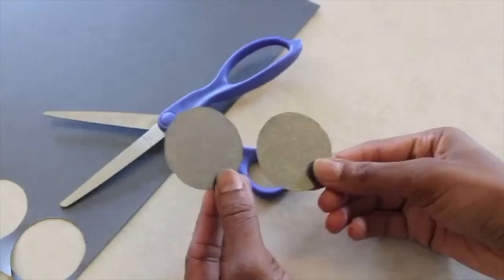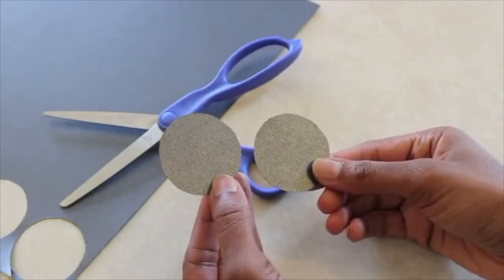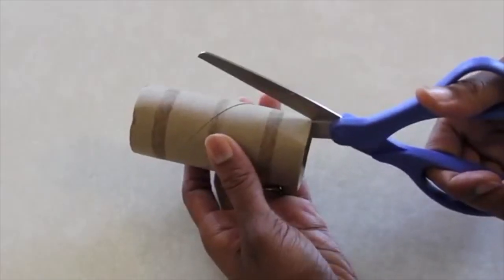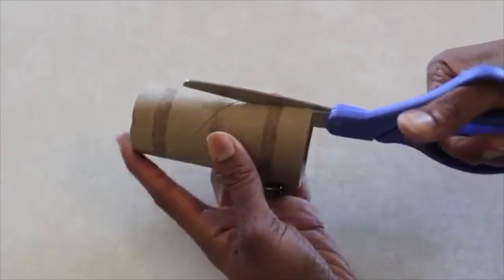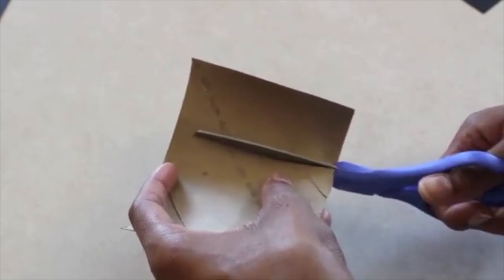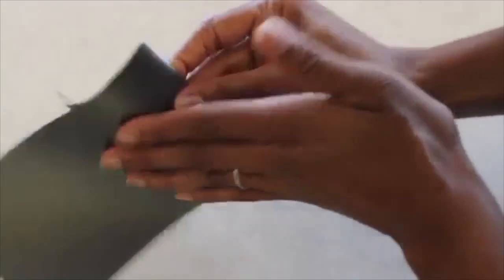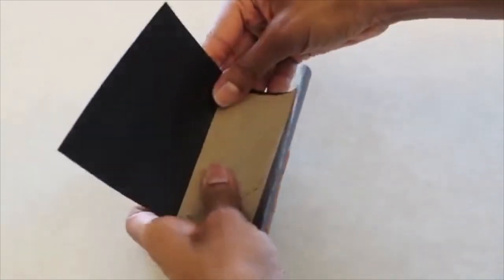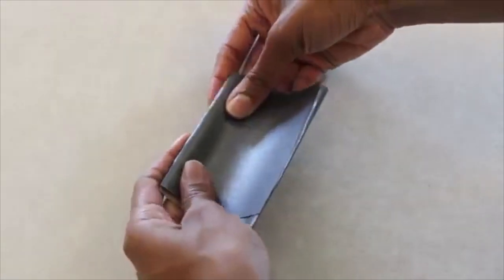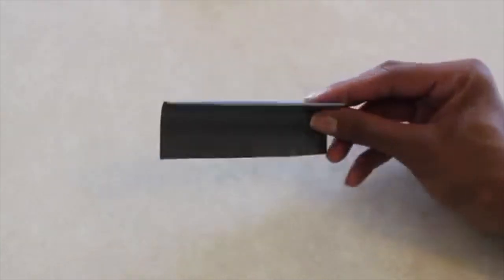I start by tracing and cutting out two circles from my scrapbook paper. I cut my toilet paper roll down the side. I cut a portion of the roll off. Cover both pieces of the roll in paper. Cover the other piece of the roll just as before.